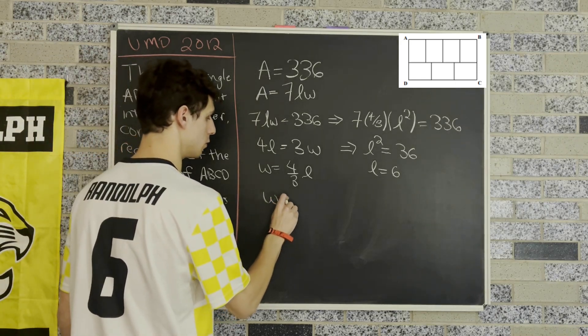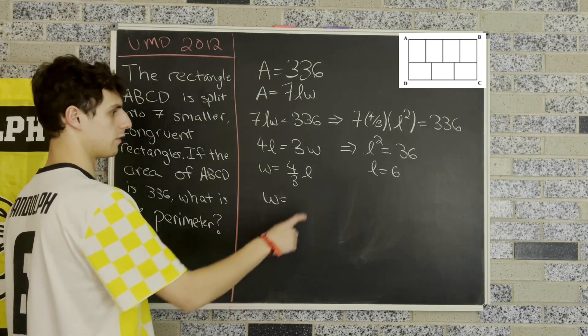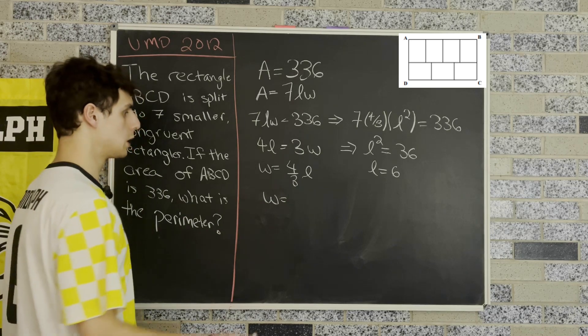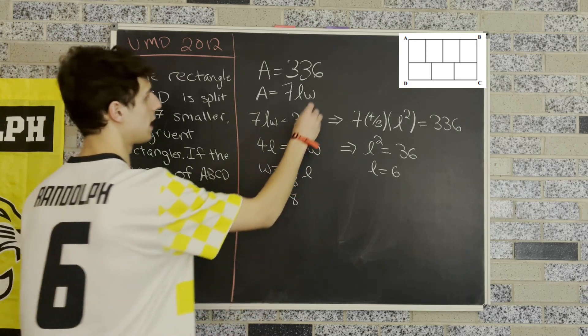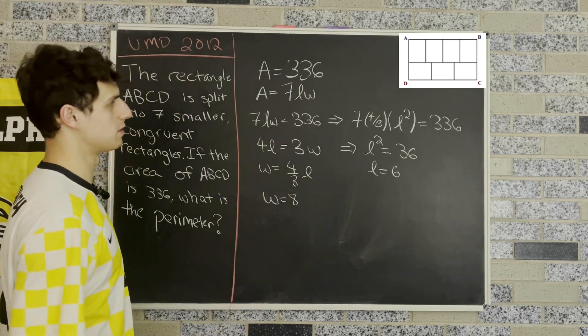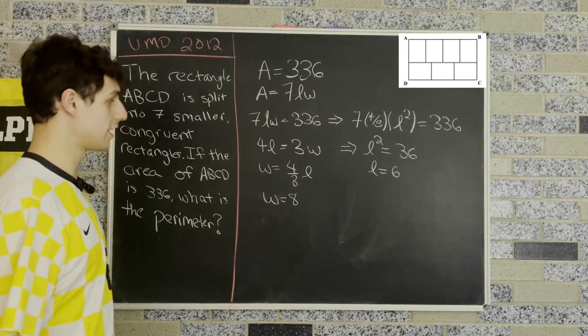Now we can solve for the width as well. That's pretty easy. That'll give us four times six divided by three, which is eight. Now plugging back in, we can check: seven times eight is 56, times six is 336. So that checks out.